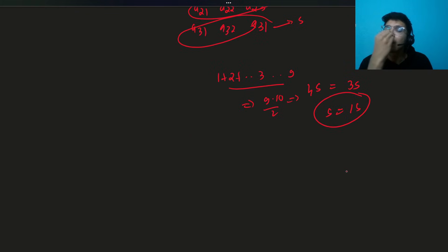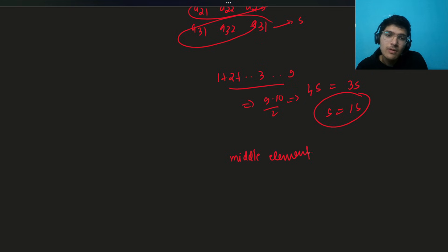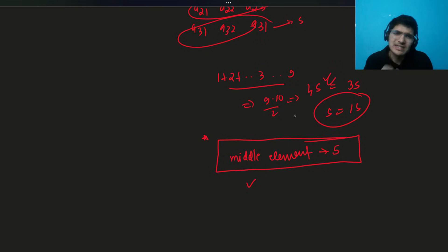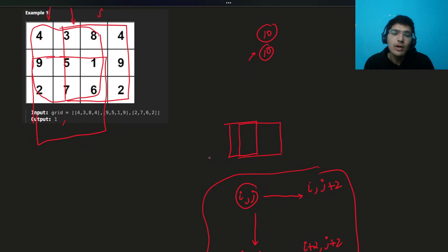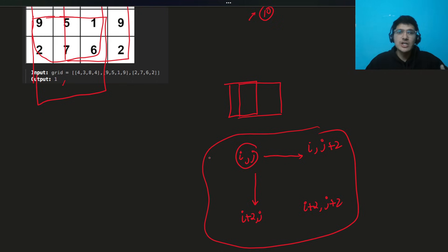Another deduction — you can skip this but it boosts performance — is that the middle element of any valid 3x3 magic square must be 5. If it isn't 5, it cannot satisfy all the required conditions. So you can add a quick early check: if grid[i+1][j+1] != 5, return false immediately. The sum being 15 is something you can't skip; the middle-element check is an optional optimization.